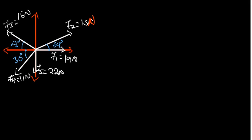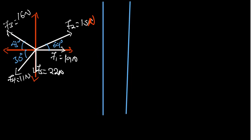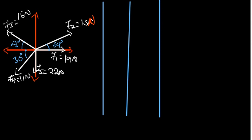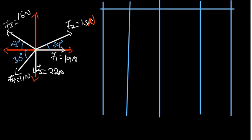Here is the table of components. We are going to have four columns: one column for the vector, one for the x-component, one for the y-component, and one for theta — the angle which we have been given. So how many vectors do we have? We have five vectors, starting with vector one, F1.